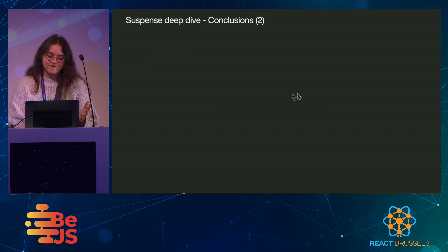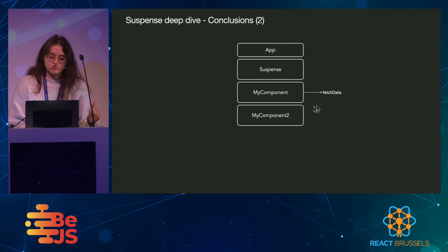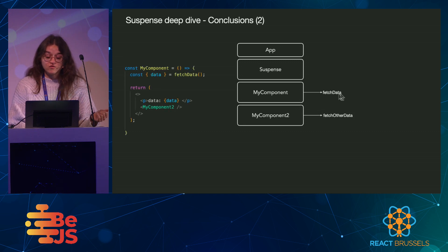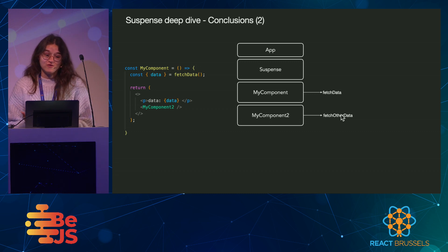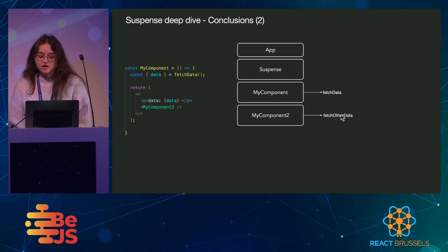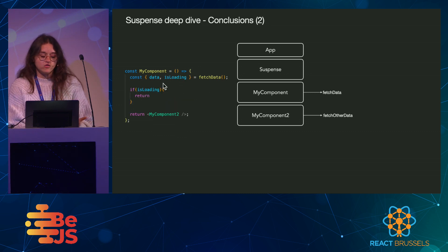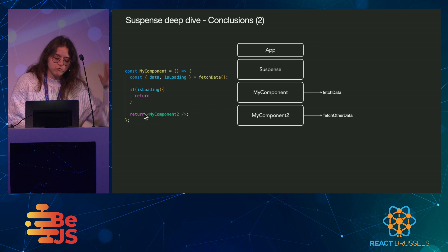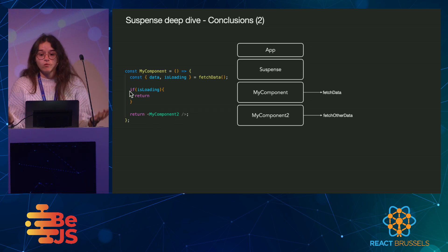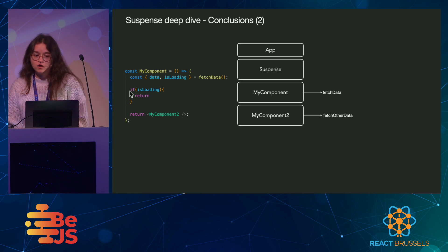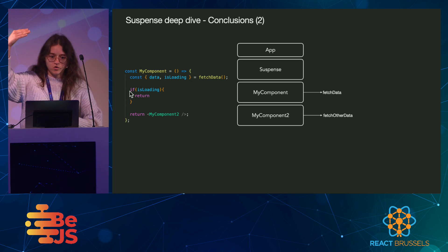But if you have queries nested into different components, these two requests won't be launched in parallel either. And this time, useSuspenseQueries can't really do anything for you. But I'm not sure that it's such a bad thing about suspense, because before suspense this was already the case. You probably, in your first component, were hiding the rest of the tree behind this loader anyway. So we already had this problem. And if you want to get rid of this, you can prefetch your data earlier above in your app.